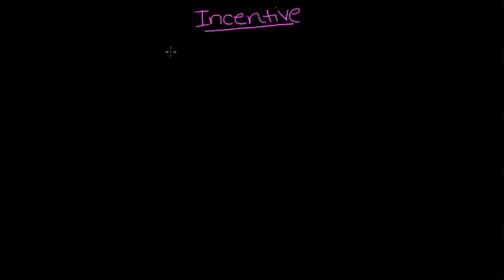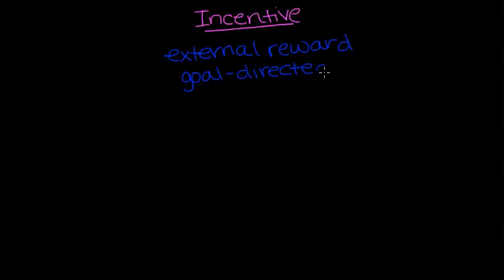The incentive theory says that behavior is motivated by an external reward. So if we perform the action that we're supposed to, we'll be rewarded. And the incentive theory is also goal directed. It has some sort of action or goal in mind that needs to be accomplished. And when it's accomplished, you're rewarded.